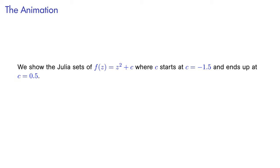In the animation we'll see shortly, we consider the Julia sets of similar polynomials. Namely, f equals z squared plus a constant. And the value of this constant will vary in the course of the animation.